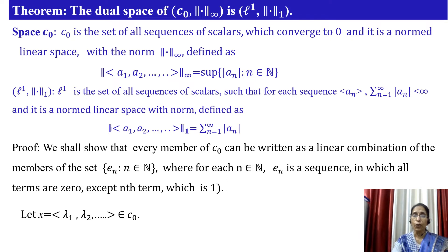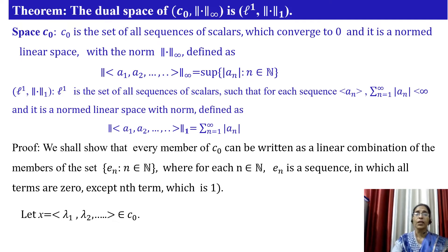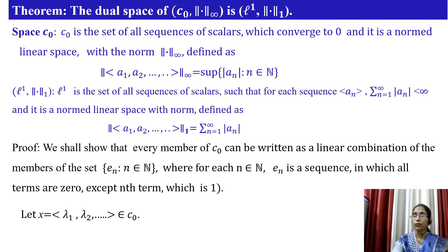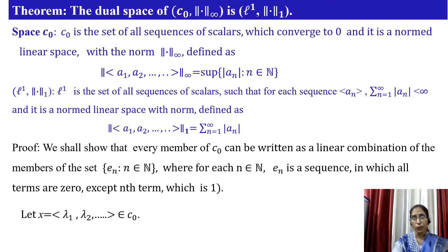Let me recall the space C₀. The space C₀ is the set of all sequences of scalars which converge to 0. It is a normed linear space with the infinity norm defined as: the infinity norm of any sequence (a₁, a₂, ...) equals the supremum of |aₙ| where n belongs to ℕ. The space L¹ with the 1-norm is the set of all sequences of scalars such that the series Σ|aₙ| is convergent, i.e., summation from n=1 to infinity of |aₙ| is less than infinity.